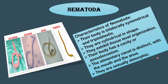Animals belonging to Nematoda have a long, thin and cylindrical unsegmented body which tapers at both ends; they are thus also called roundworms. Roundworms are mostly parasites that live inside the digestive tract of human beings and herbivorous animals; some also live in soil or water. They have a tube-like digestive system with a mouth at one end and an anus at the other. Ascaris and hookworms are nematodes.